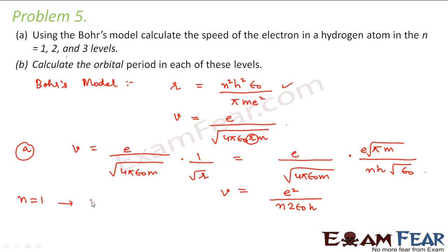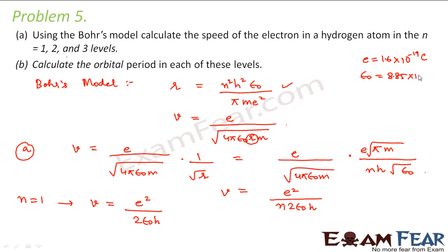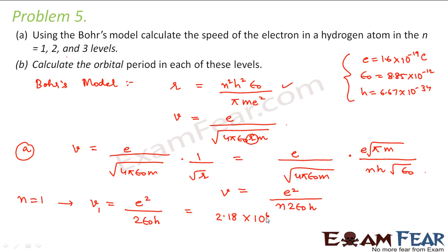Therefore, for n equal to 1, v₁ becomes equal to e² divided by 2 ε₀ h. With e equal to 1.6×10⁻¹⁹ coulombs, ε₀ equal to 8.85×10⁻¹² and h equal to 6.67×10⁻³⁴, putting these three values, v₁ comes out to be 2.18×10⁶ meters per second.